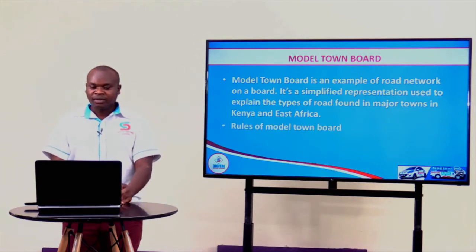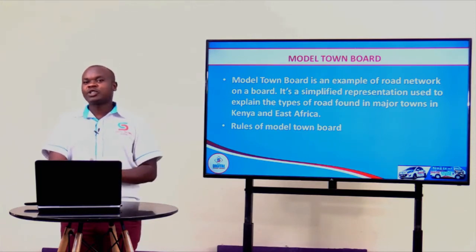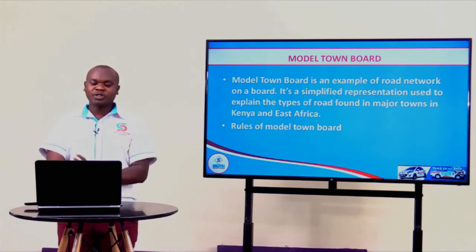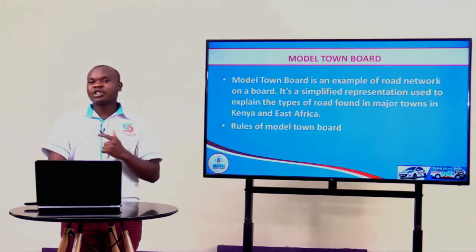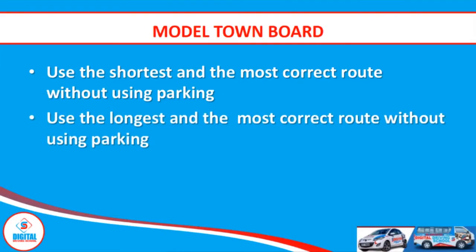The next thing we are going to look at is the rules of a model town road. These rules are applicable where we are driving our toy cars from point A to point B. If you are given a question and told to drive this car from point A to point B, always look for the shortest route and the most correct without using parking. That is rule number one. If you have already exhausted the shortest route, now look for the longest route and the most correct, again without using parking. That is our second rule.